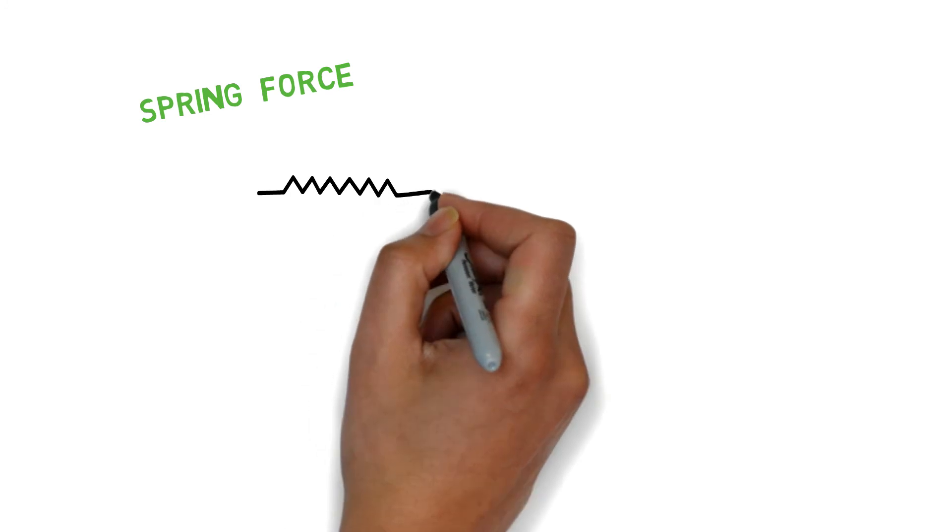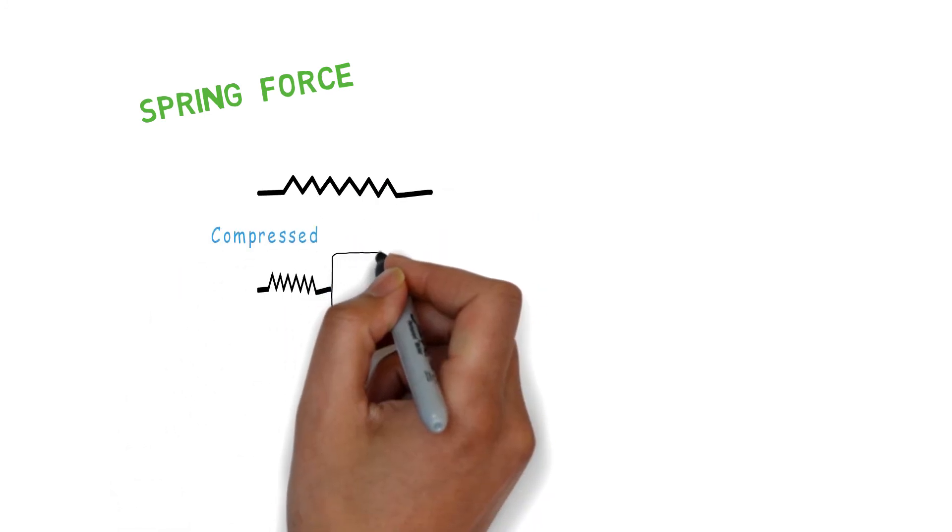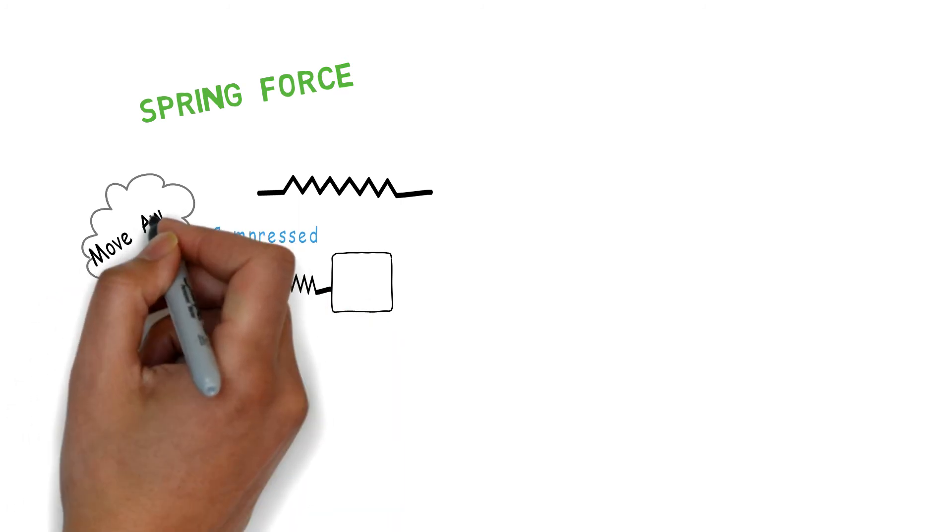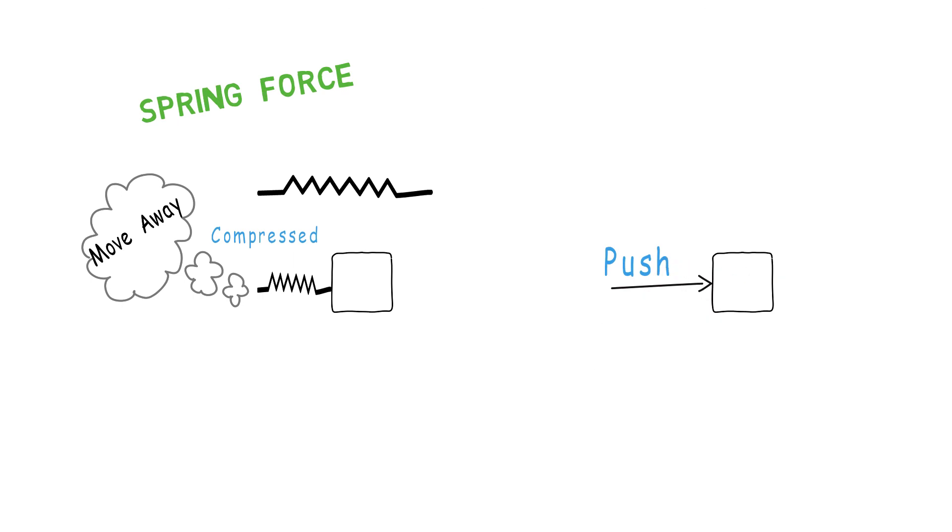Spring force. A spring has a tendency to return back to its original equilibrium position. Hence, in the case of a compressed spring, it will tend to push the object away from itself to get back to its main position. Zero force when the spring is uncompressed or it is in its main position.